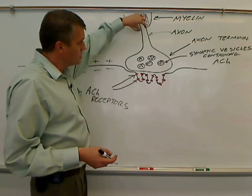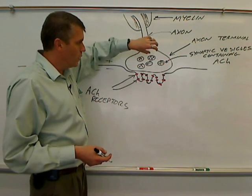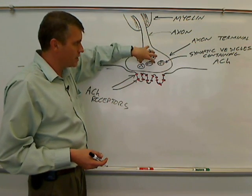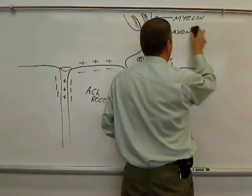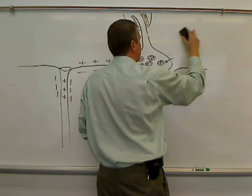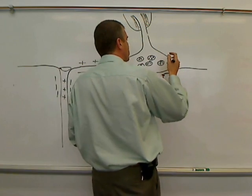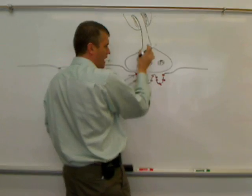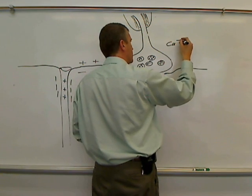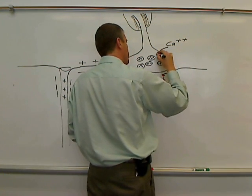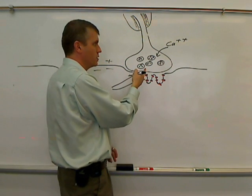An action potential comes down the neuron and it reaches the axon terminal. When that action potential reaches the axon terminal, it stimulates calcium to enter the axon terminal. So I'm going to get rid of my arrows because they're kind of in my way. So the action potential came down here to the axon terminal. And what that does is it opens up calcium channels. And calcium enters the axonal button or the axon terminal.